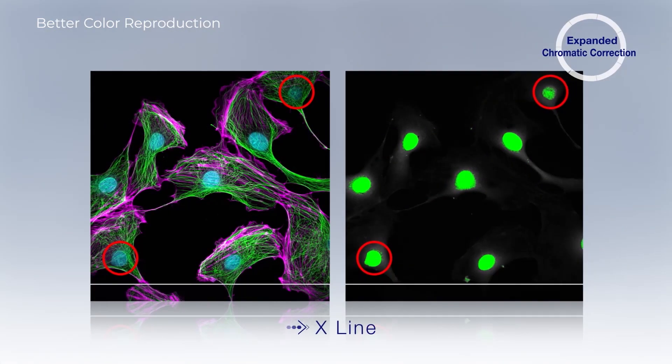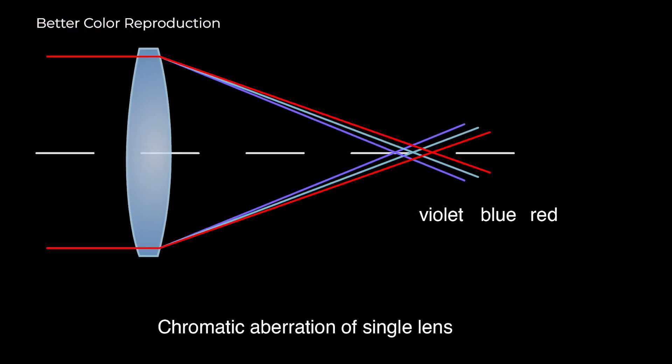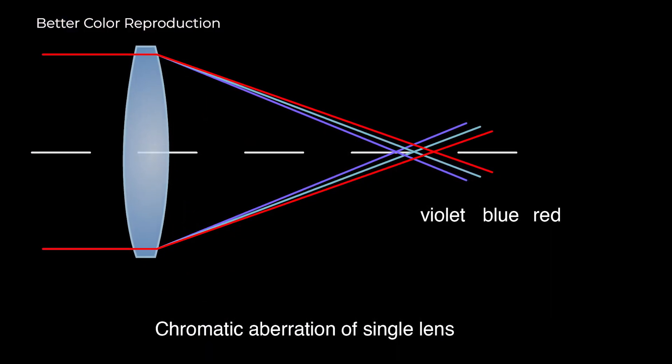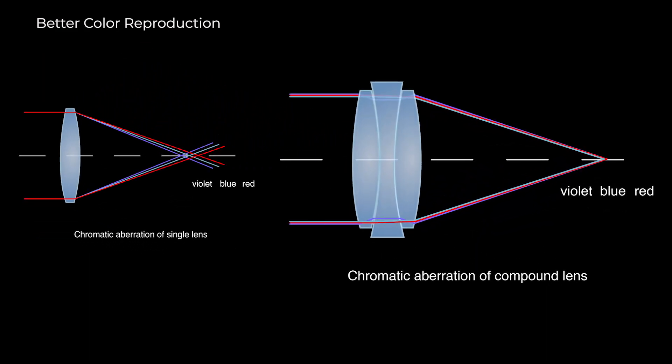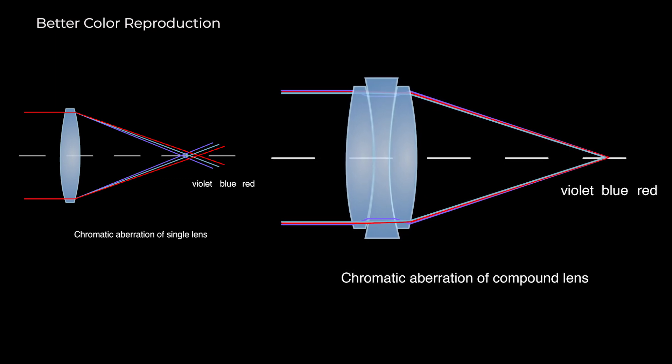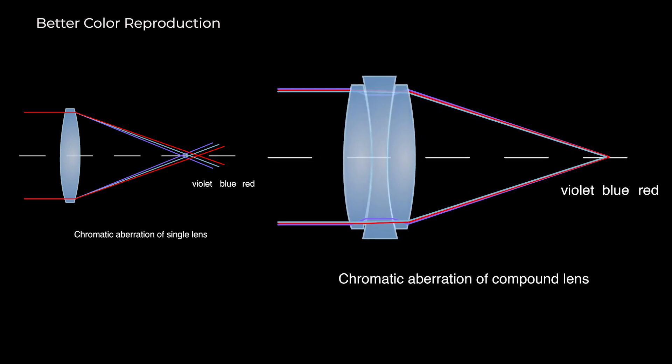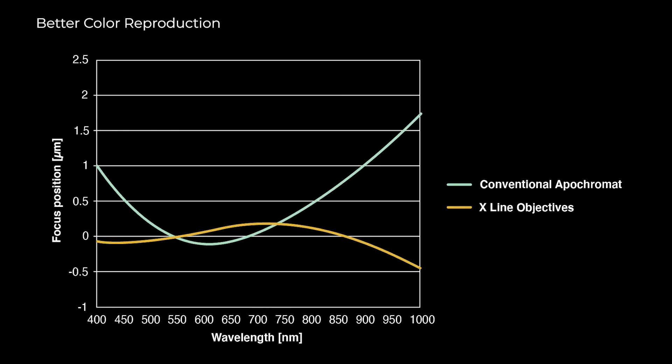Chromatic aberration is caused by glass that has a different refractive index for each wavelength. Generally, the refractive index of glass is higher for shorter wavelengths. Optically, you can correct for chromatic aberration by combining convex and concave lenses so that red and blue light focus on the same position. Now that we can fit more optics in a single objective, corrections are improved from 400 to 1,000 nanometers.